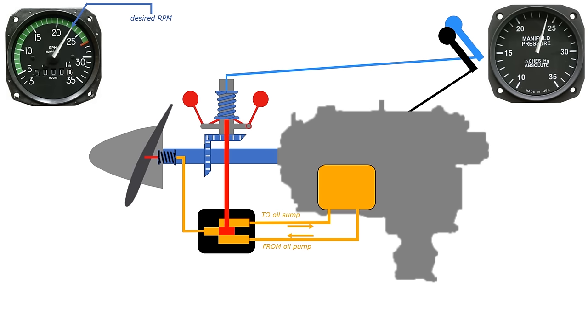Currently, our power settings are 2300 RPM and 24 inches of manifold pressure. This is the same inches of mercury unit of measurement we used to set our altimeter. It's just a measure of pressure.